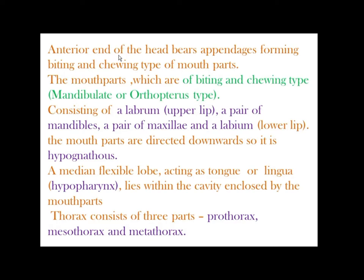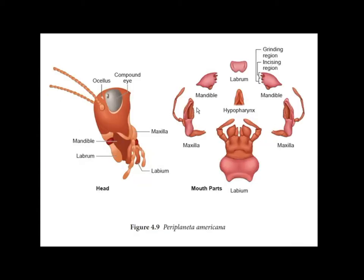At the end of the head, appendages form biting and chewing type mouthparts. The mouthparts include labium, a pair of maxillae, tongue or hypopharynx, a pair of mandibles, and labrum. The mandible has a grinding region and an incision region.